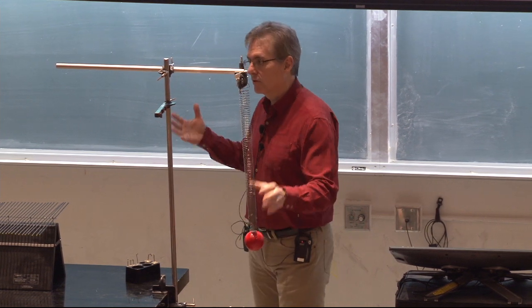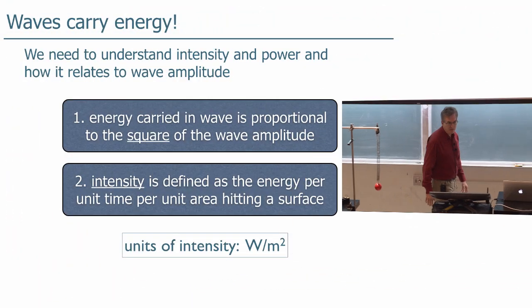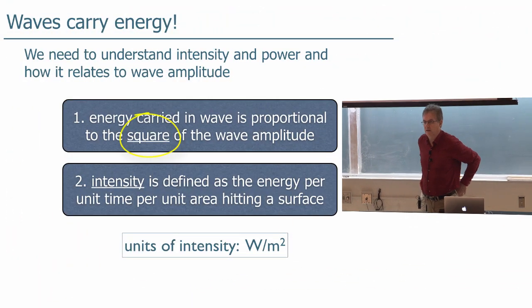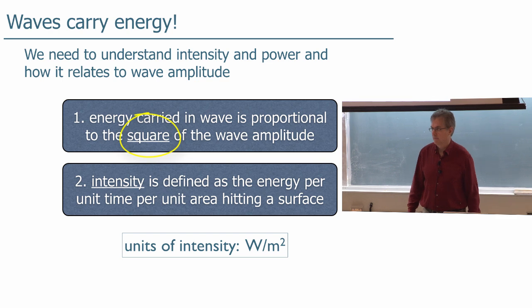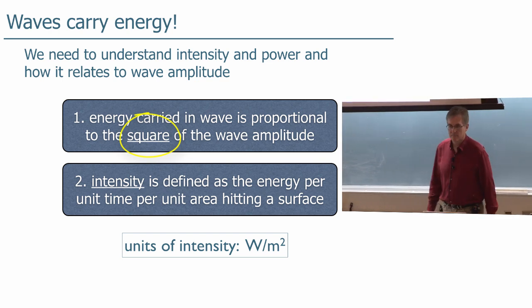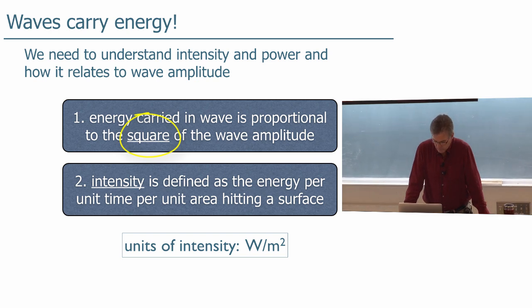Therefore, the total energy of a simple harmonic oscillator has to go with the square of the amplitude of the oscillation. If you double the amplitude you get four times more energy. If you triple it you get nine times more energy. It goes with the square.